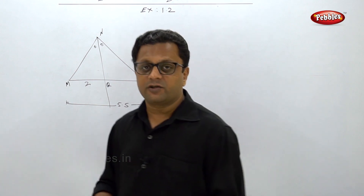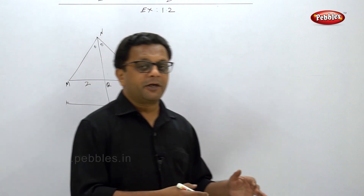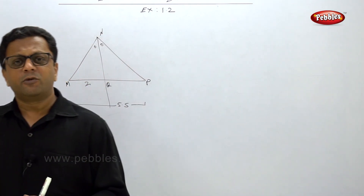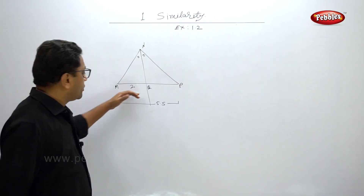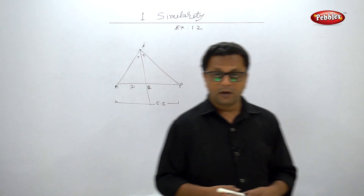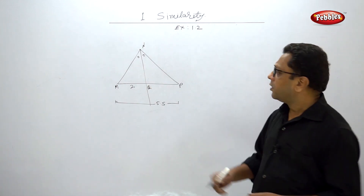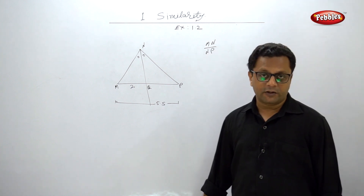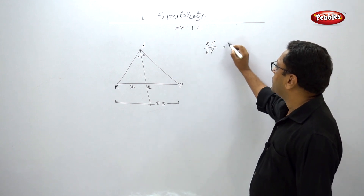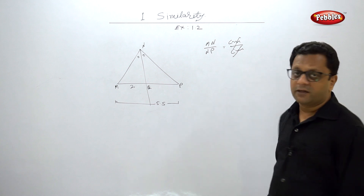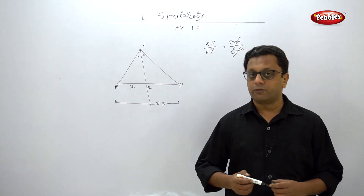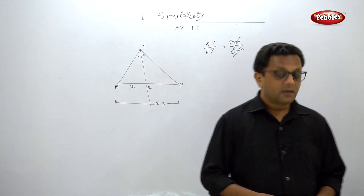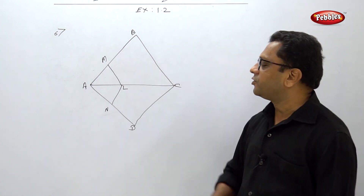Write the answer in the same units as given. If no unit is given, write no unit. If they ask for a ratio, remember the ratio has no unit — because both measurements are in centimeters, the units cancel out. But if they ask for a side length, write the proper unit. Let us go ahead to Example 6.